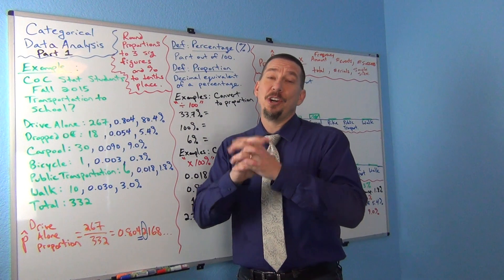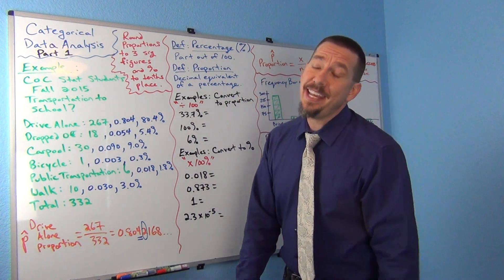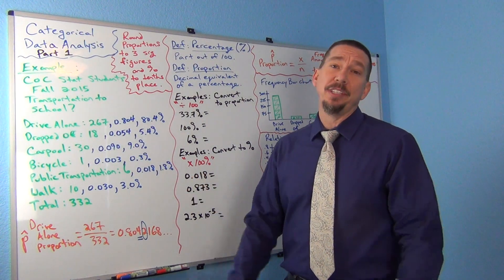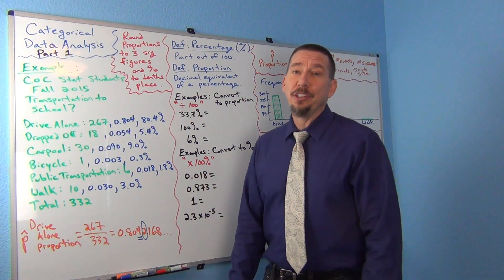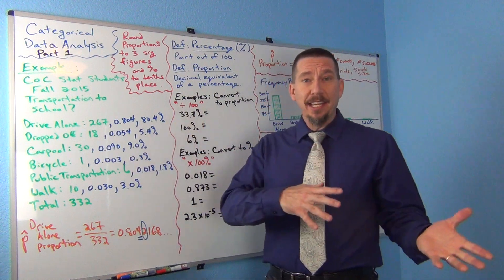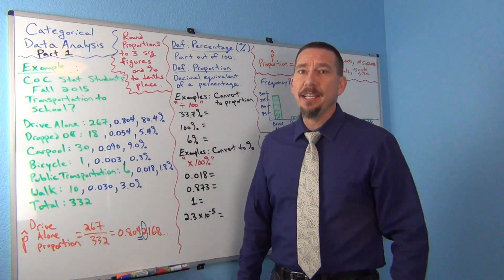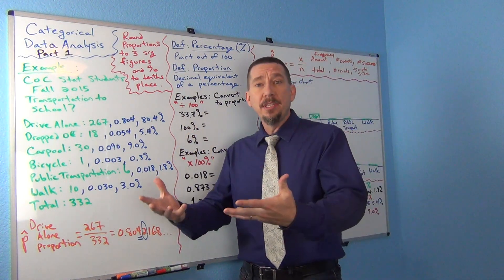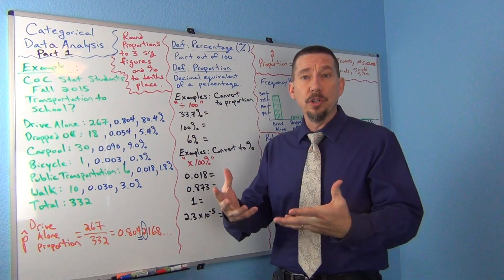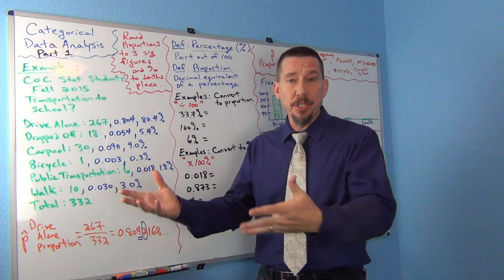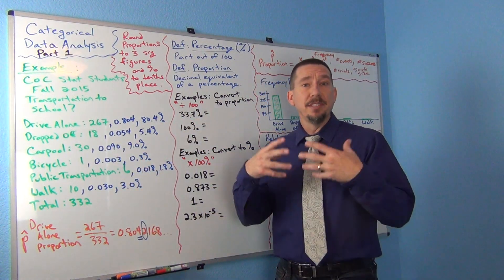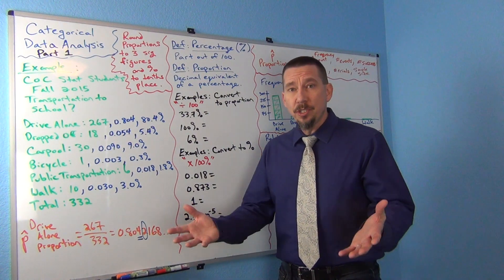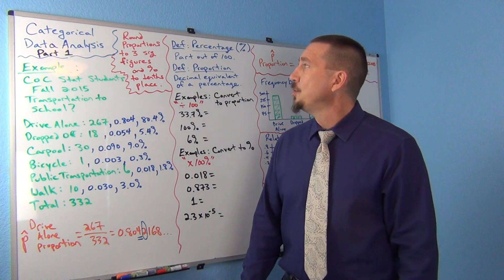Hi everyone, this is Matt Tuchot with IntroStats and today we are starting a discussion about basic categorical data analysis. We learned that there were two types of data: categorical data and quantitative data. Categorical data was data that describes — usually words that describe people or objects, like what city you live in, what state, what school do you go to — all of those kinds of categorical questions.